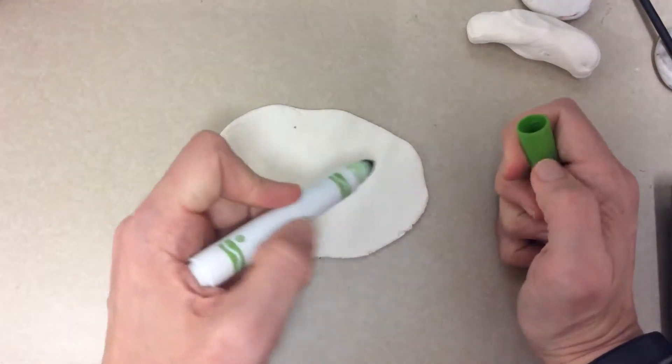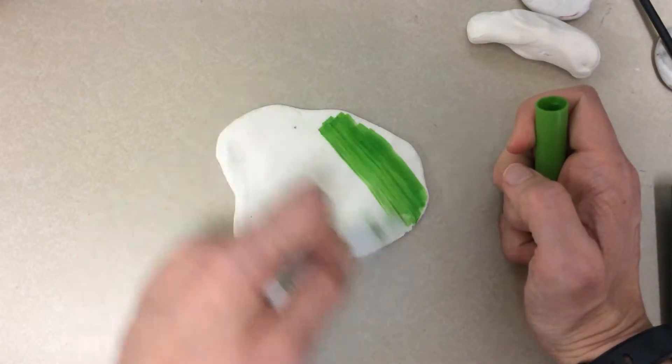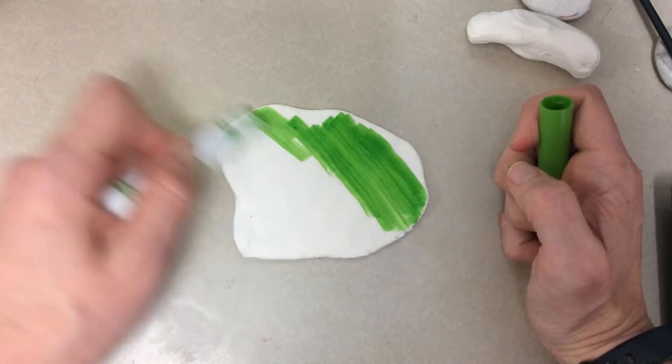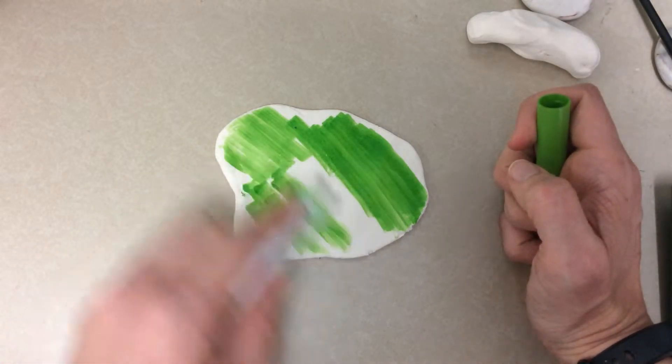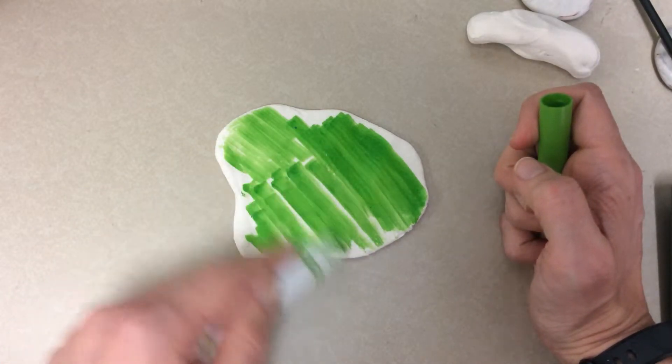So I'm going to take a green marker and make sure it's a good marker. Remember, if the marker is dried out, don't use that one. You want plenty of that color to transfer to the Model Magic.